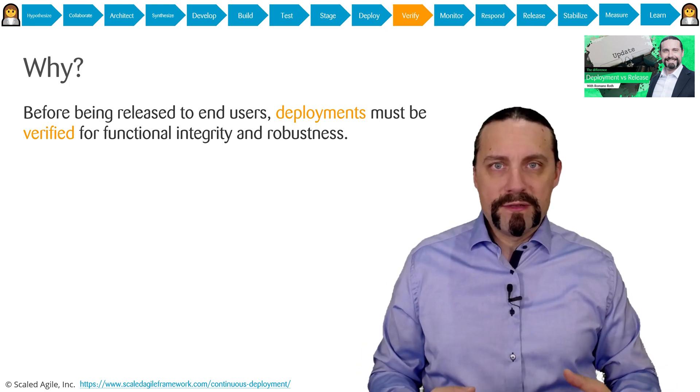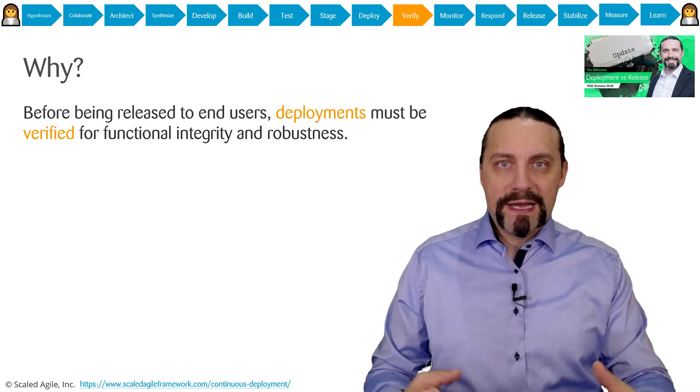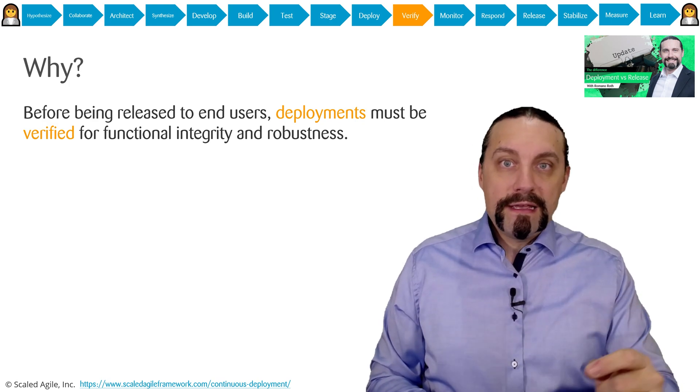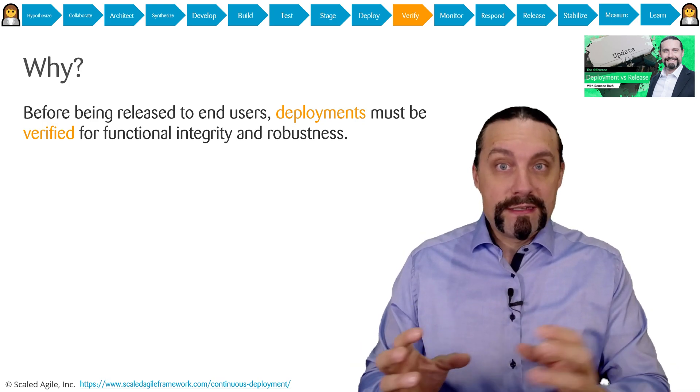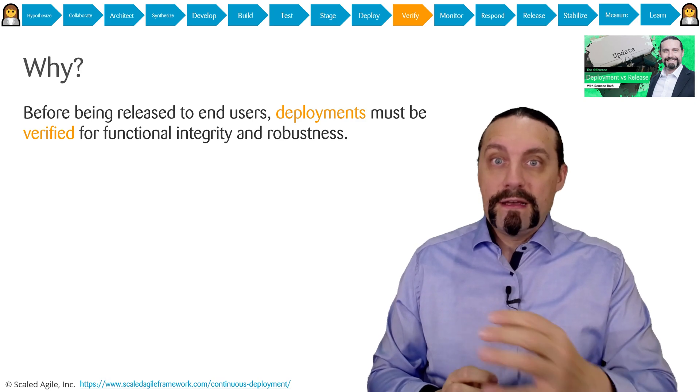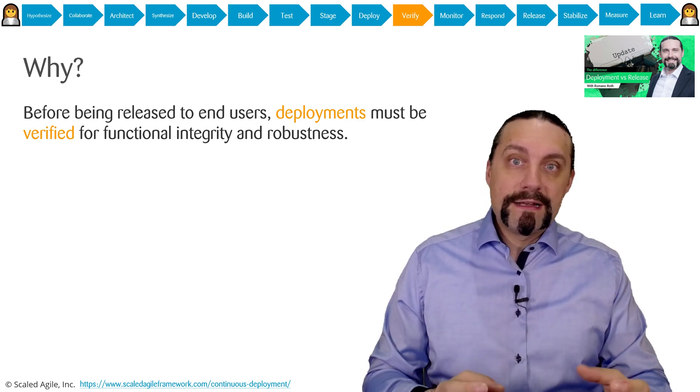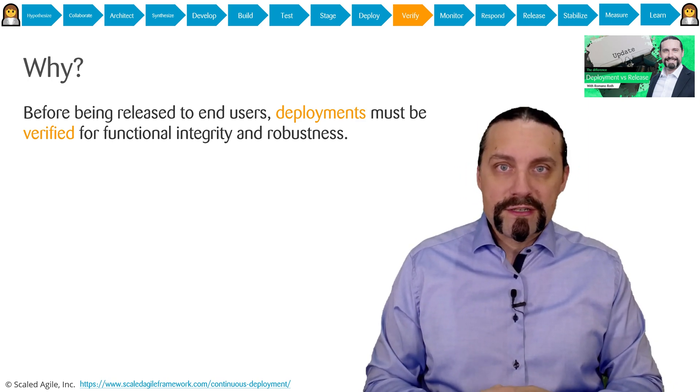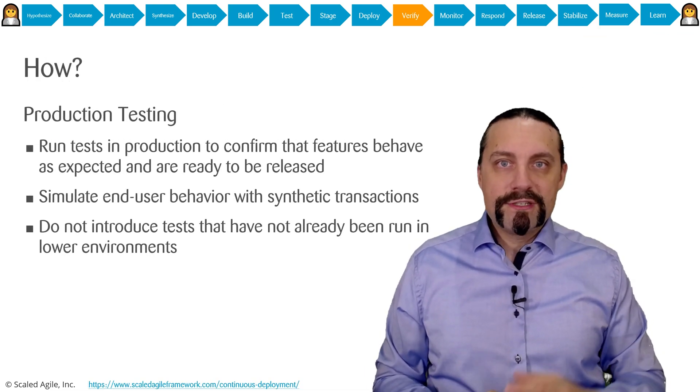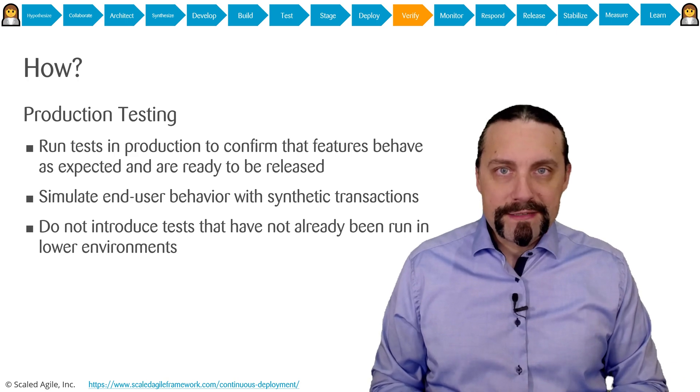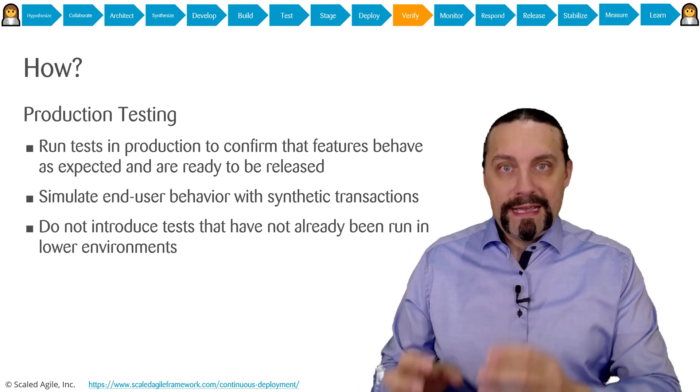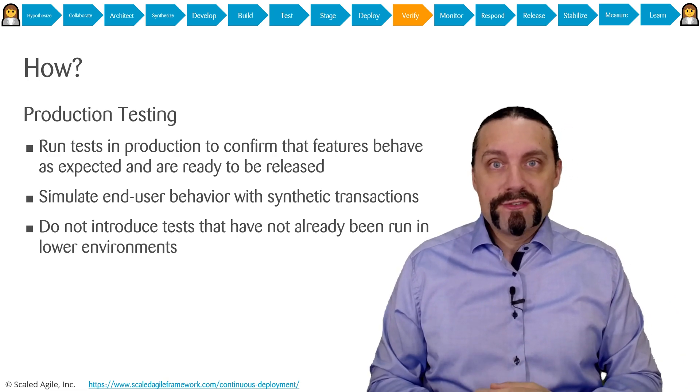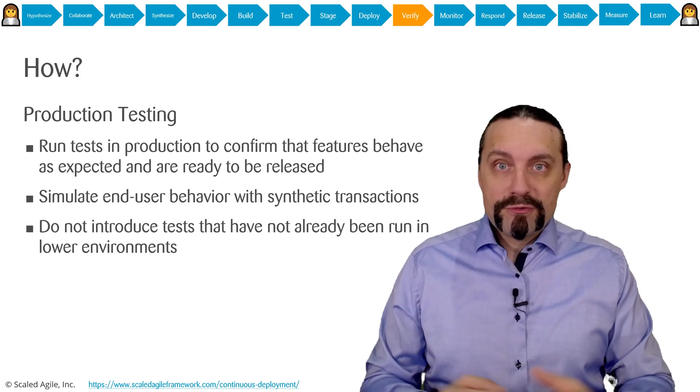With the continuous deployment, we have deployed now the package into production environment. Now we need to verify if the package is still working in the production environment and if the new functionality has a negative impact on the integrity or the robustness of the production environment. And this verification is done by production testing. So we will execute tests that we have already executed in the lower stages again in the production environment.